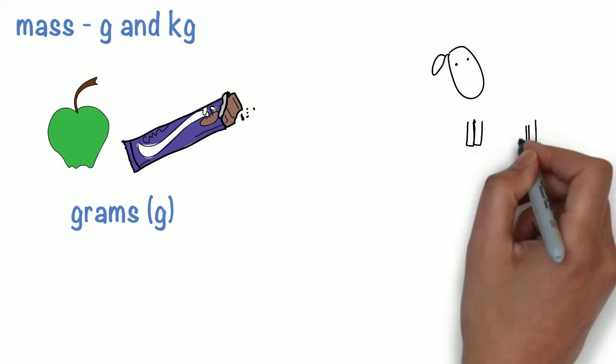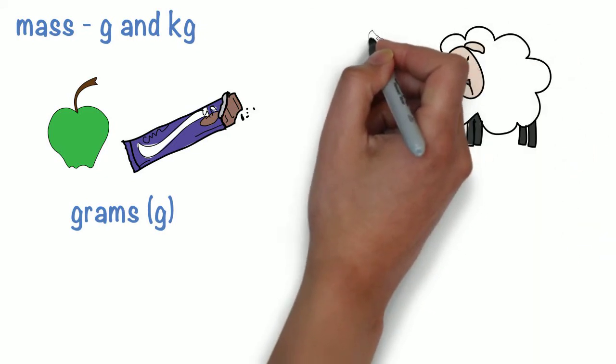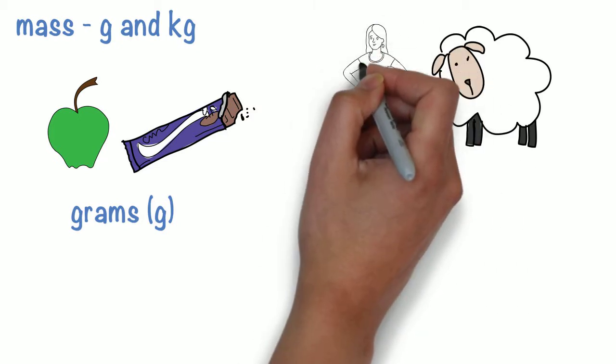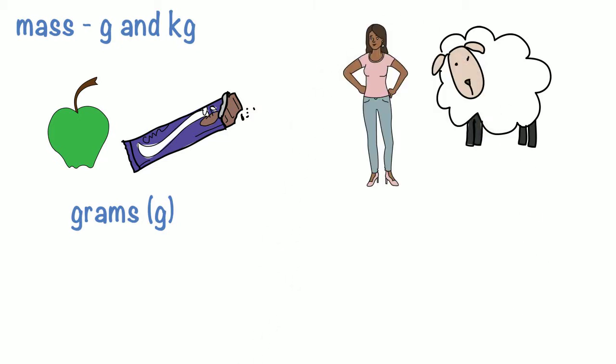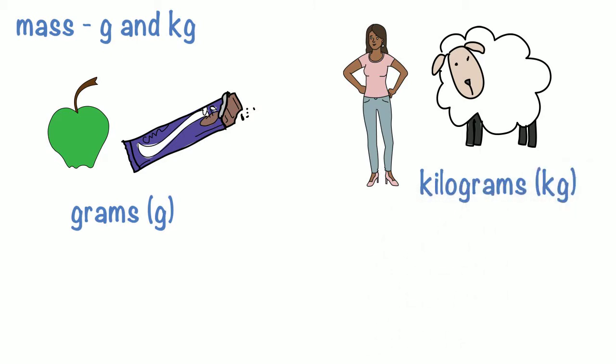Kilograms are used to measure the mass of larger things, like animals, people, maybe a car. We need to use scales to measure both of these things, although depending on the amount of grams or kilograms we're using would depend on the scales that we need.